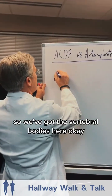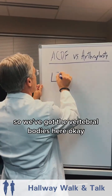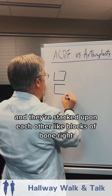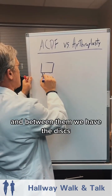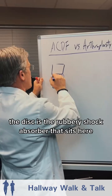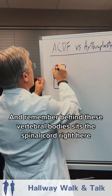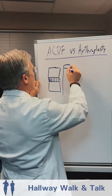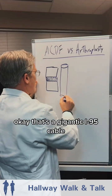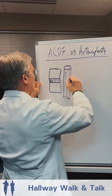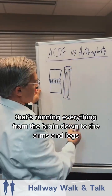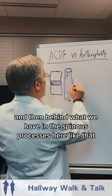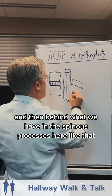We've got the vertebral bodies here, and they're stacked upon each other like blocks of bone. Between them we have the discs — the disc is the rubbery shock absorber that sits here. Behind these vertebral bodies sits the spinal cord right here — that's a gigantic I-95 cable running everything from the brain down to the arms and legs and back up again. And behind that we have the spinous processes here.